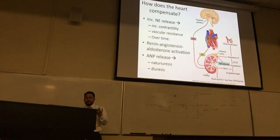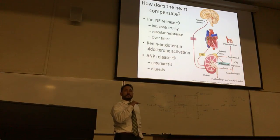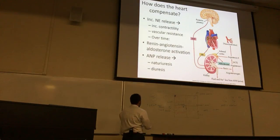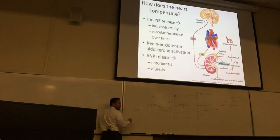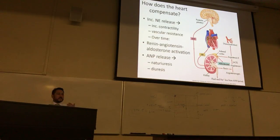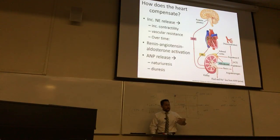Unfortunately, a side effect of norepinephrine is an increase in vascular resistance — total peripheral resistance. If total peripheral resistance increases out in the vascular network, this leads to a decrease in venous return. A decrease in venous return lowers ventricular filling and lowers preload, ultimately lowering cardiac output. So the initial increase in contractility is a good thing, followed weeks to months later by a secondary problem of increased peripheral resistance.